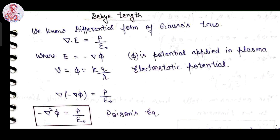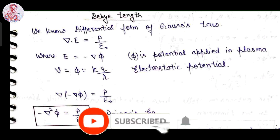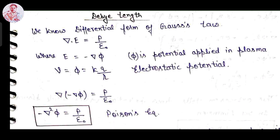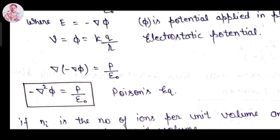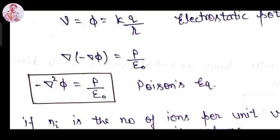Now we will see the derivation of Debye length. From the differential equation of Gauss's law: ∇·E = ρ/ε₀, and electric field E equals the negative gradient of potential, and potential φ = kq/r. Substituting these values we get ∇·(−∇φ) = ρ/ε₀, which means −∇²φ = ρ/ε₀. This equation is known as the Poisson equation, and it will help us derive the Debye length equation.